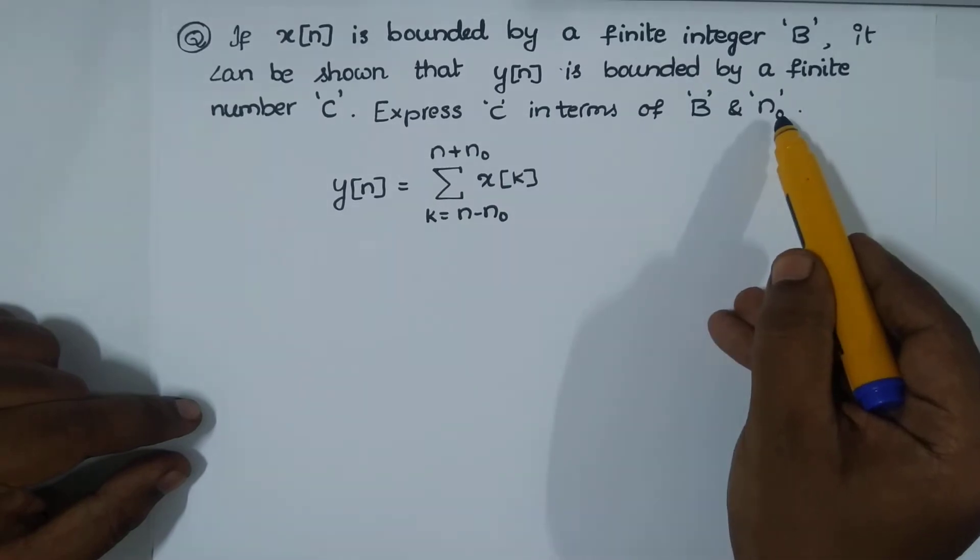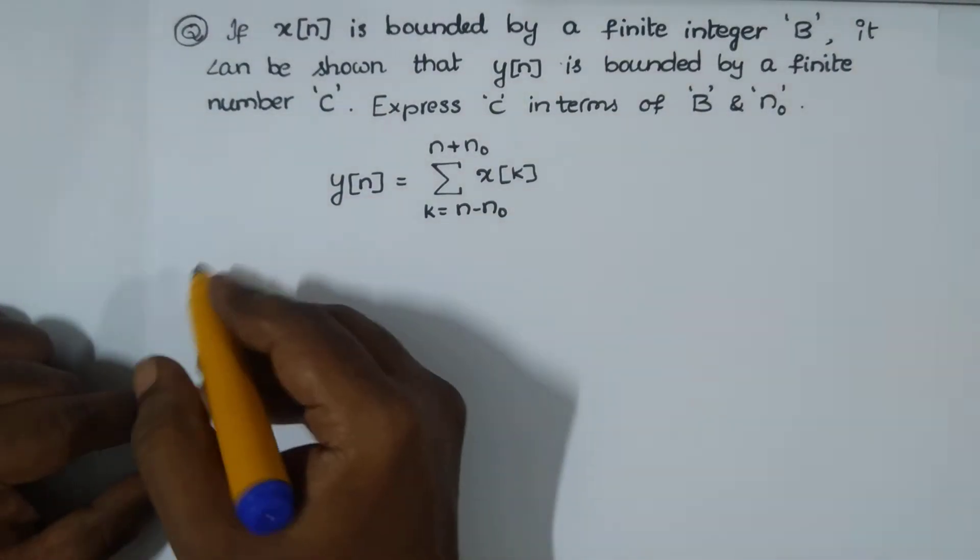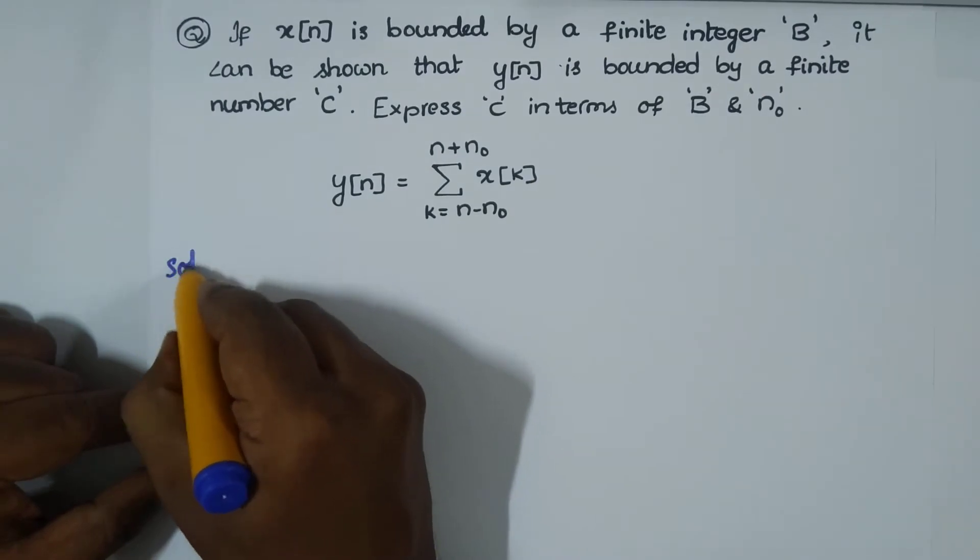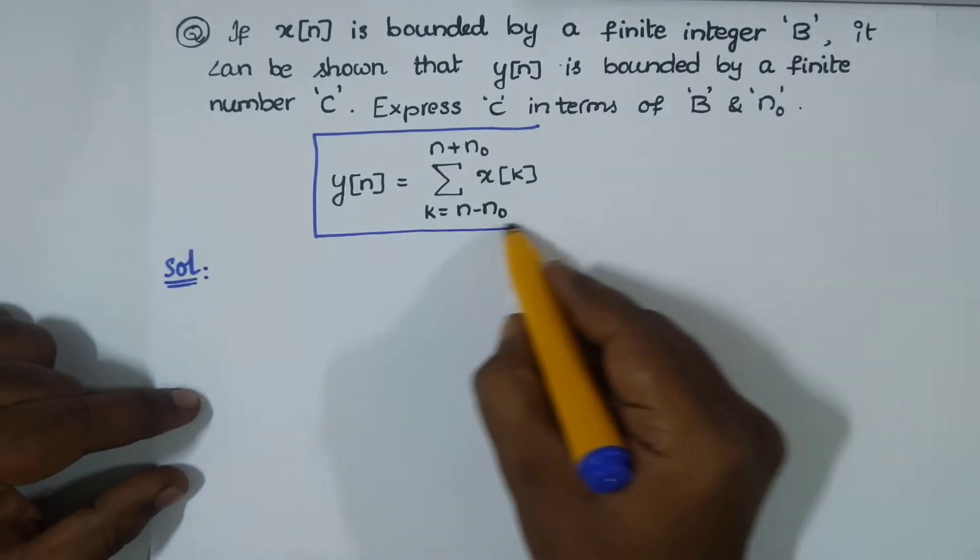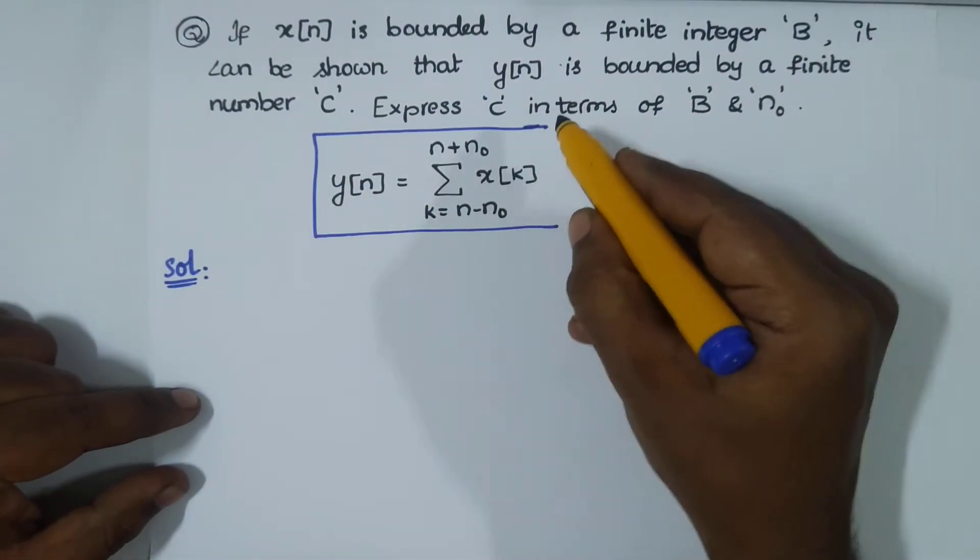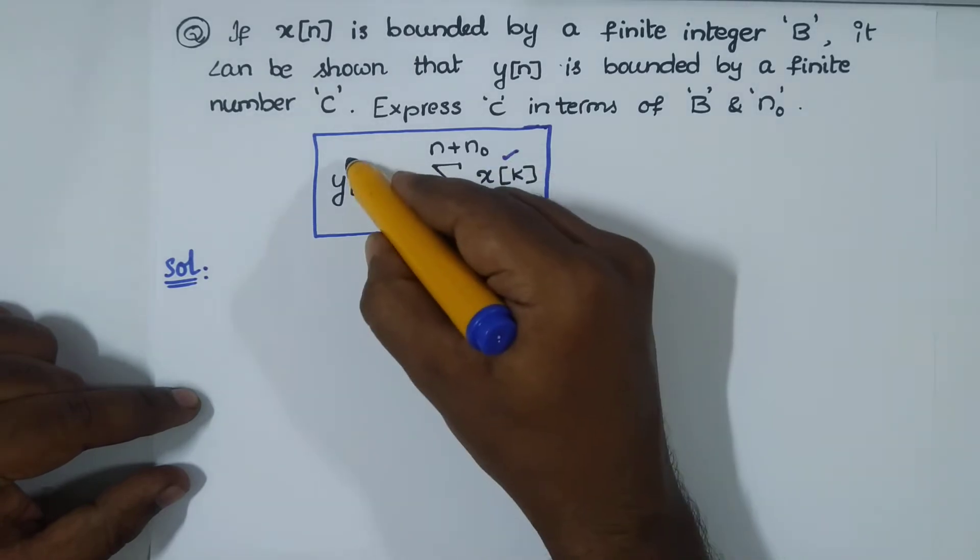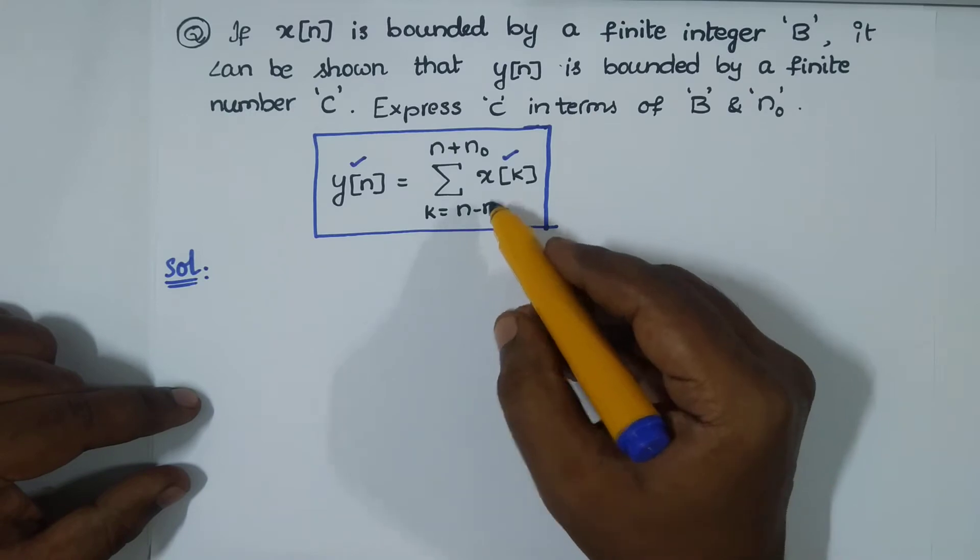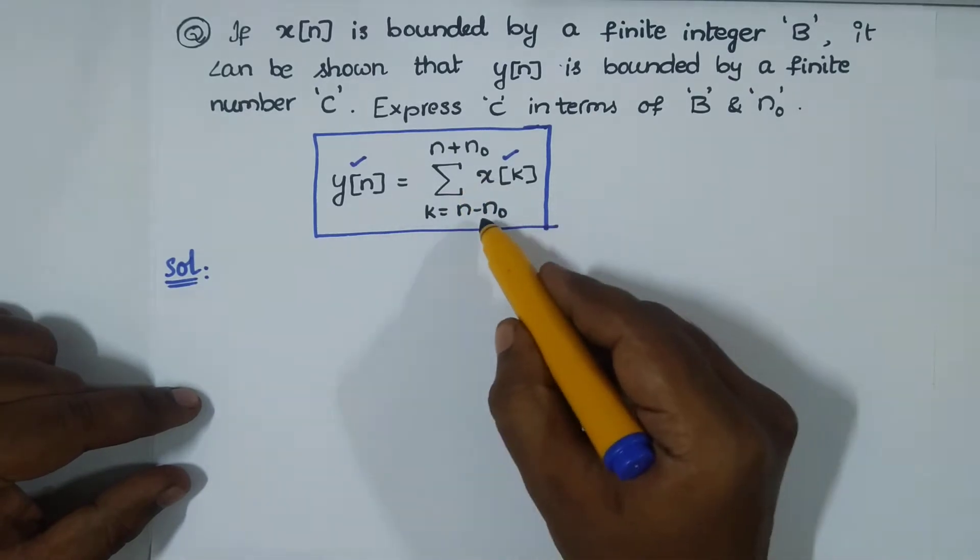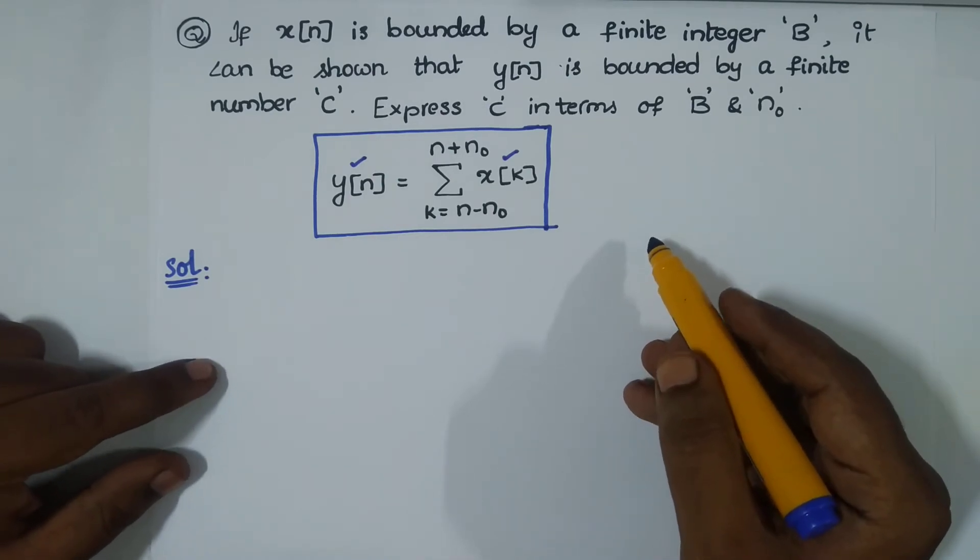It's very simple, there's no big deal in this. We are given a system that establishes a link between input and output. We have the summation running from limit n minus n₀ to n plus n₀.